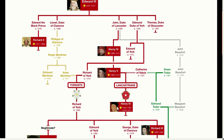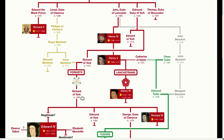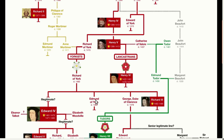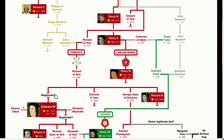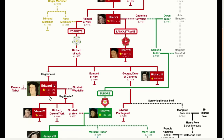Initially the Lancastrians held on to power and Richard of York and his second son Edmund were killed. But the eldest son continued to fight and eventually scored a big victory, becoming King in 1461. Henry VI managed to take back the throne briefly, but then Edward IV won again. When Edward IV died, things got complicated yet again.